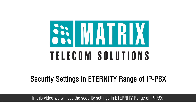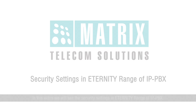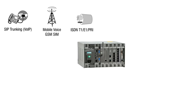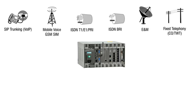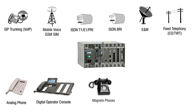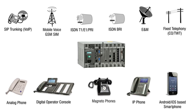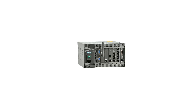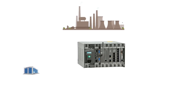In this video we will see the security settings and Eternity range of IPBX. The Matrix Eternity range of IPBX offers interfaces such as IP, GSM or 3G, T1E1 PRI, ISDN BRI, ENM, CO (FXO), Analog Extension (FXS), Digital Extension DKP, Magneto phones, IP Extension and Mobile Extension. They come in different footprints to match the communication needs of any organization. Matrix Eternity systems meet varied communication requirements of customers from diverse industries, businesses and institutions.